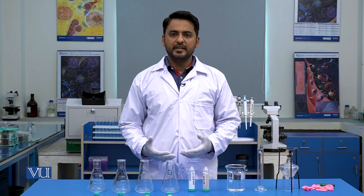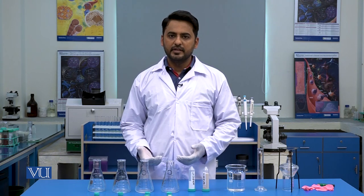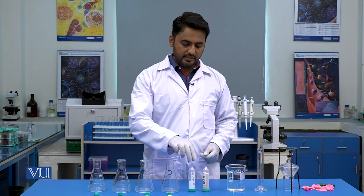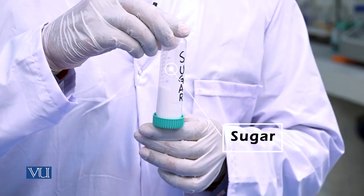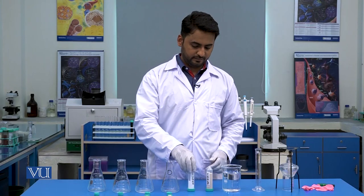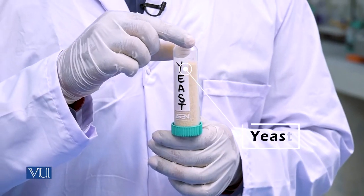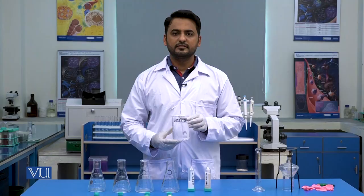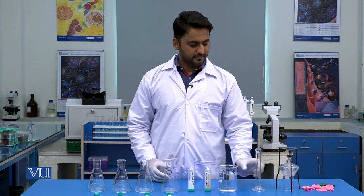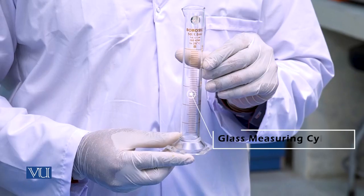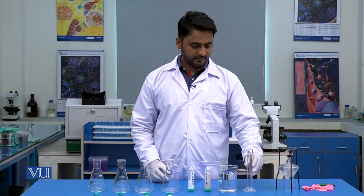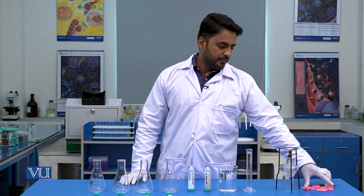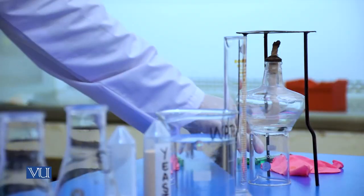Let me introduce you to the chemicals and apparatus which we will use in this experiment. We will use four glass flasks of 250 ml capacity. Then we will use sugar, yeast, distilled water, a glass measuring cylinder, a tripod stand along with a spirit lamp, balloons, and a lighter.